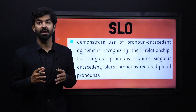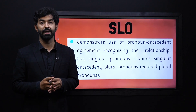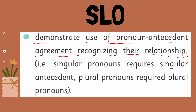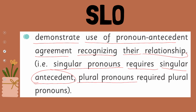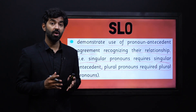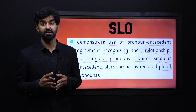Let's read our student learning outcome to see what we are going to do in this video. The SLO is: demonstrate use of pronoun-antecedent agreement, recognizing their relationship. That is, singular pronouns require singular antecedents, and plural pronouns require plural antecedents. So, my dear learners, this video lesson and our SLO is about pronoun-antecedent agreement.